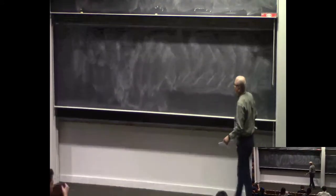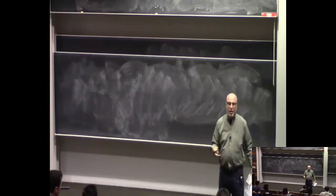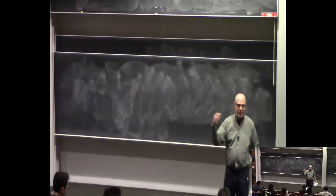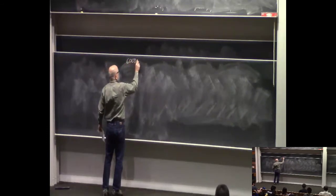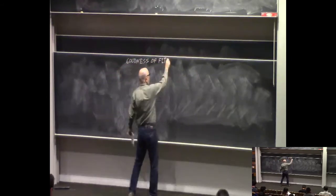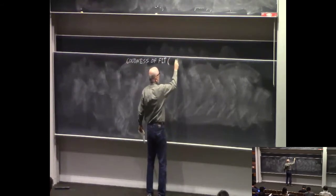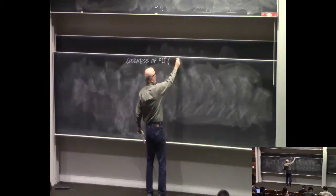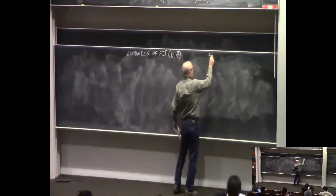We'll start with this idea that I think is the central idea of machine learning: that machine learning can very often be thought of as optimization of two components. One is how well your theory fits the data, and the other is how simple your theory is. We'll call that goodness of fit — how well your theory, which I'll designate with parameters theta, fits the data D.